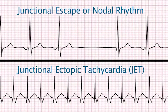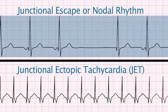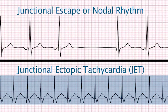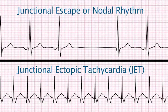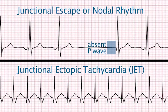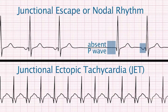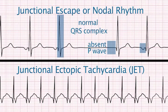Rhythms originating in the atrioventricular or AV node include junctional escape or nodal rhythm and junctional ectopic tachycardia or JET. Characteristics of atrioventricular rhythms are: P waves may be absent, or if present, they can occur after the QRS complex and are inverted. The QRS complex is usually normal in duration and configuration.